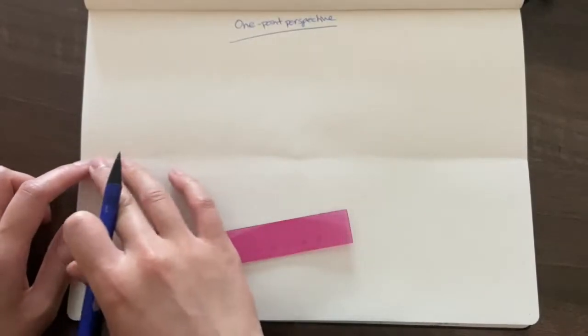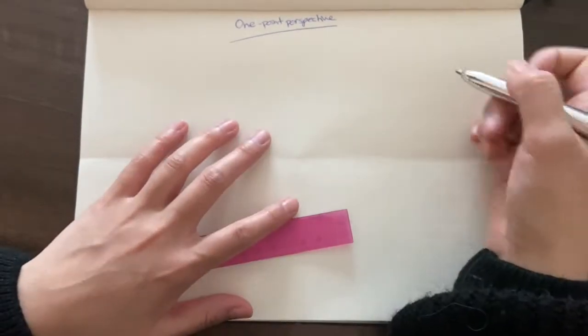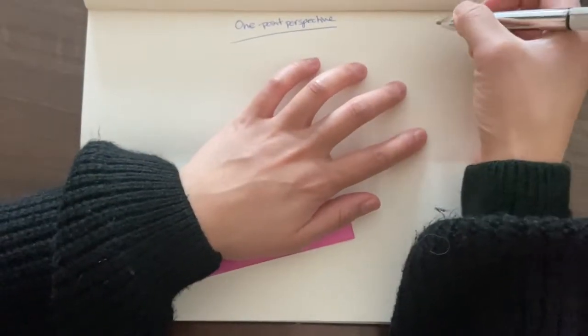The first thing you're going to do is draw a horizon line. So imagine where a horizon line would be if you were looking at a landscape and so forth.